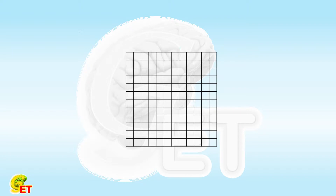On a grid, if you select several connected cells, you will get a puzzle. Even if you fix the number of the selected cells, you may also have multiple different puzzles.